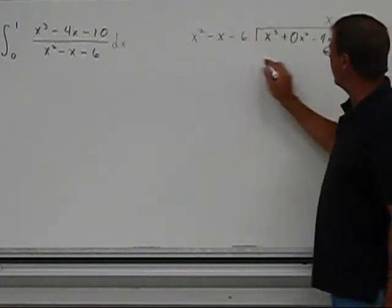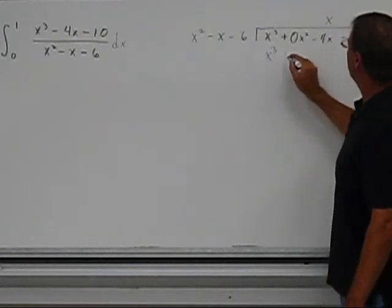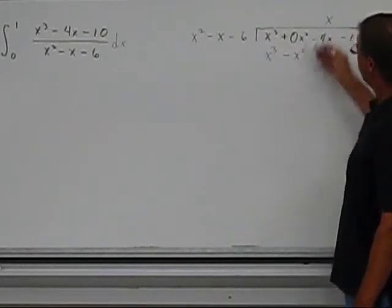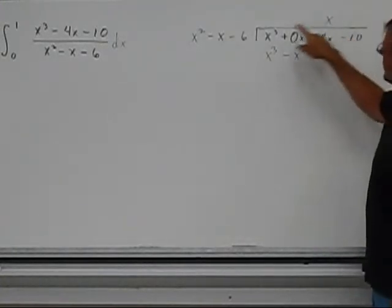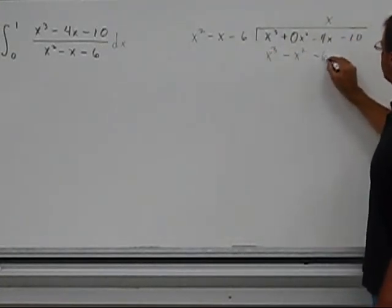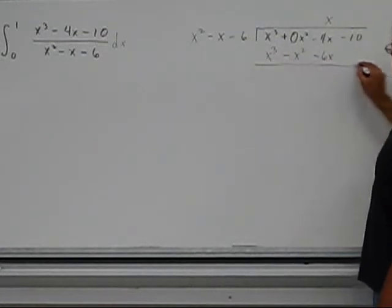Multiply back, I get x cubed minus x squared, and this, you can see, this is why I added that 0x squared term so that it would line up. x times negative 6 is negative 6x, and then I'm going to subtract.